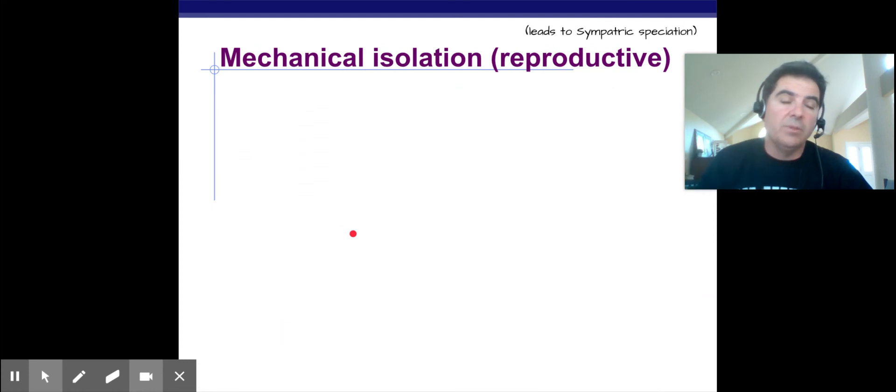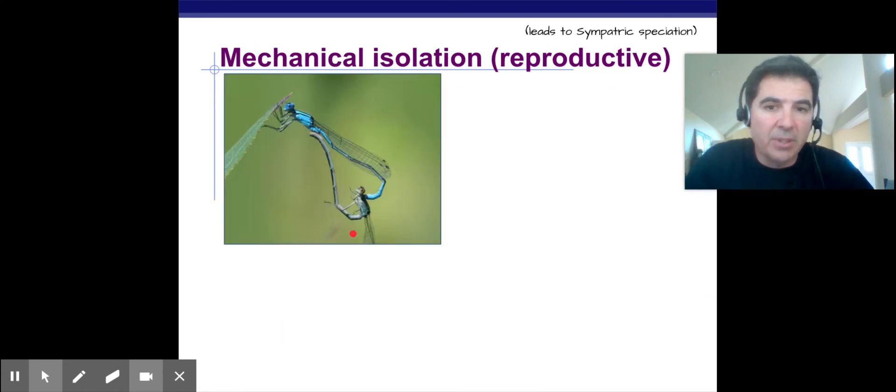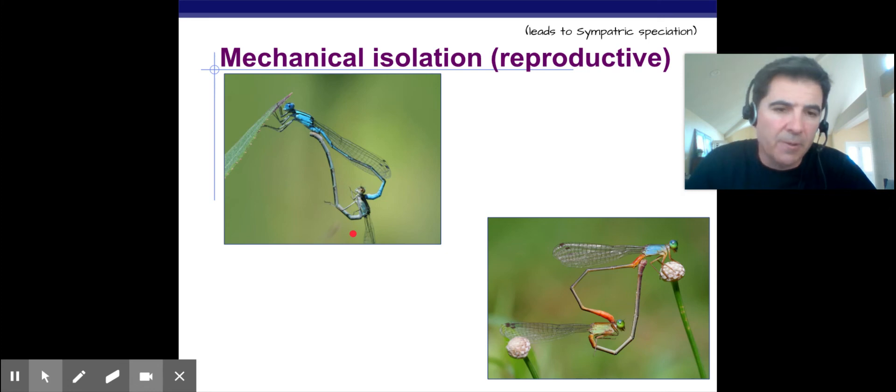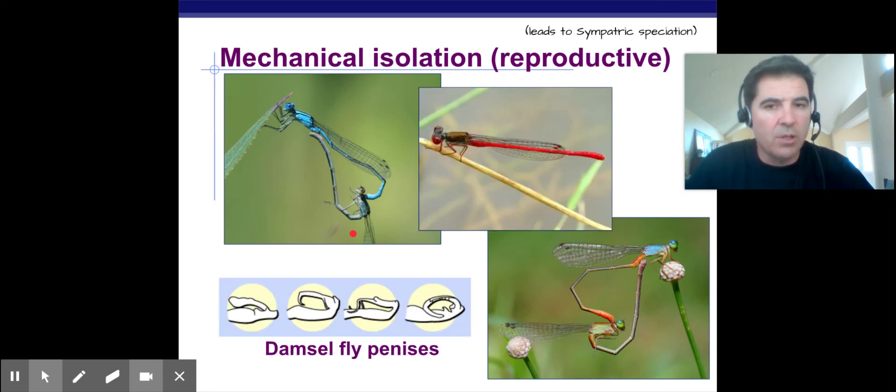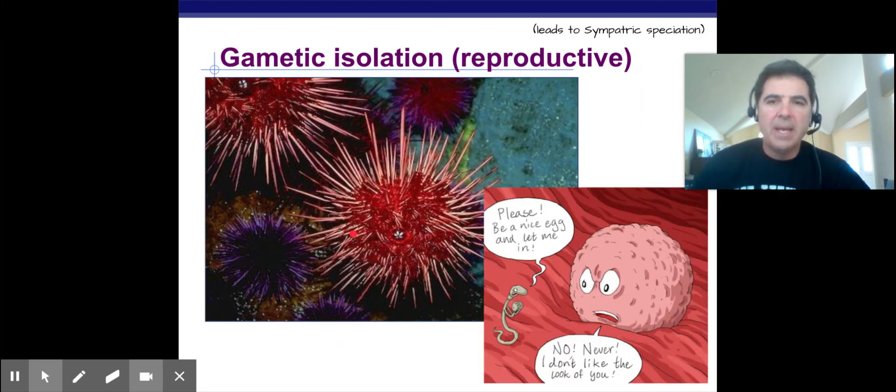Mechanical, this one's easy. They have different shapes. The shapes and the positions of these damselflies or dragonflies will not allow them to actually procreate together. Even though they could, if you could mix the sperm and the egg together maybe in a petri dish you could form a new organism, but their penises will not allow them to do it. So they can't. So that's a form of reproductive isolation.